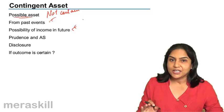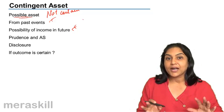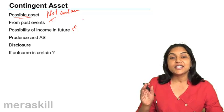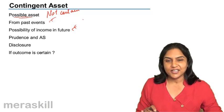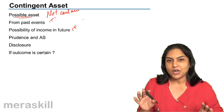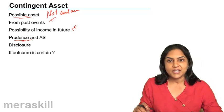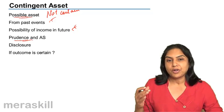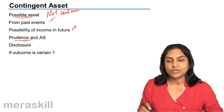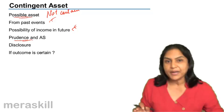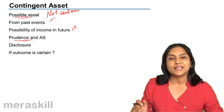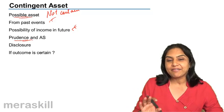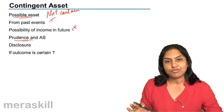But having said this, we have already done a couple of concepts like the conservatism concept and the realization concept. What does the conservatism concept or the prudence concept say? It says that any future losses, if we anticipate future losses, we should provide for them. But if we anticipate incomes, we do not recognize them till it is actually realized. Even our realization concept says that any revenue can be recognized only when it is actually realized.